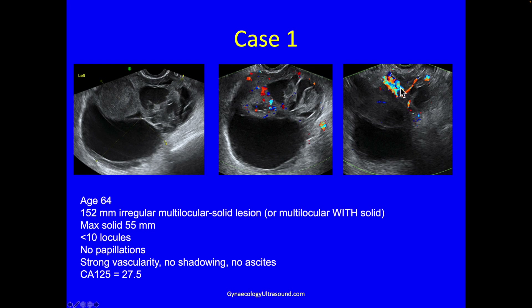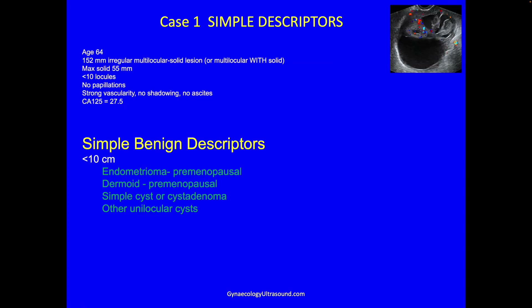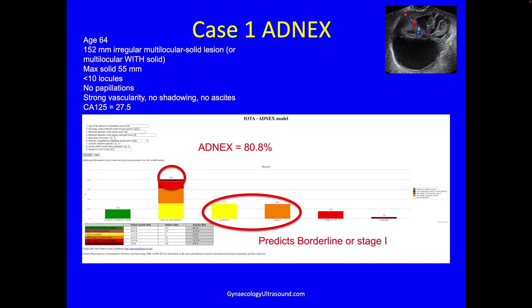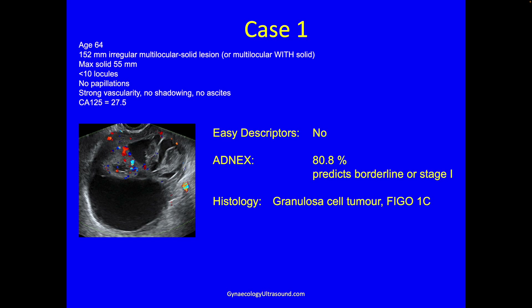Strong vascularity, no shadowing, no ascites. This does not fit any of the benign simple descriptors — it's too big and it's multilocular solid, not a unilocular cyst. Applying ADNEX, the risk of malignancy was 80.8%, predicting either borderline or stage one. This was removed and was a stage one granulosa cell tumour — an ovarian malignancy.